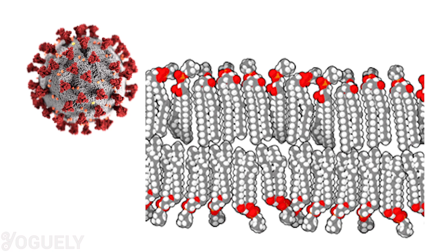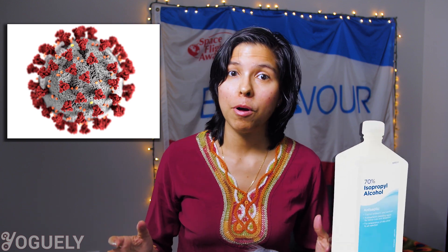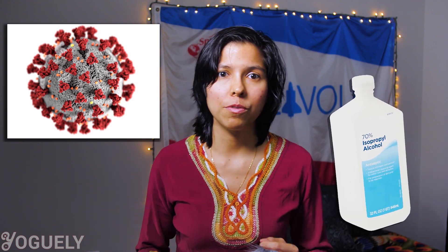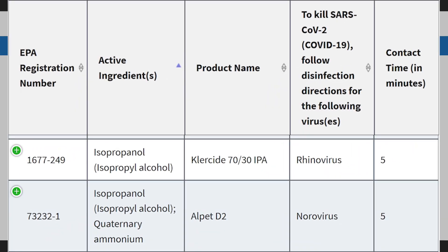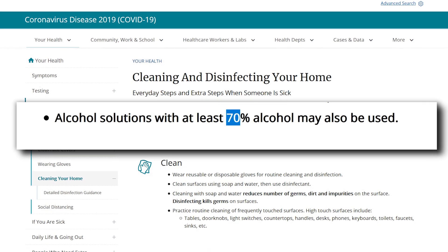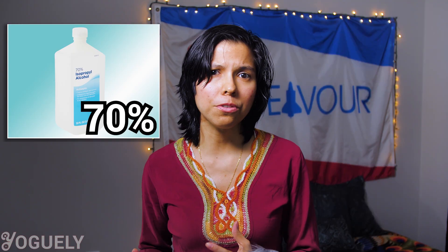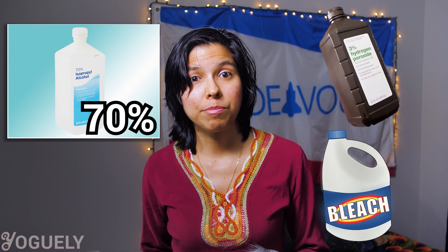Can 70% isopropyl alcohol kill coronavirus? Isopropyl alcohol is fully active against lipid viruses — those are viruses whose cell membranes are made of a lipid bilayer. Coronaviruses have a lipid bilayer, so isopropyl alcohol is very effective in inactivating COVID-19. For this reason, the EPA registers isopropyl alcohol as an effective disinfectant for SARS-CoV-2. The CDC also recommends using at least 70% alcohol to disinfect at home. Other useful disinfectants against coronavirus include sodium hypochlorite (bleach) or hydrogen peroxide.